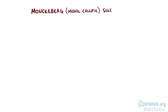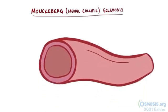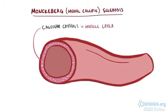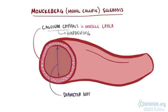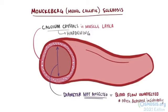Another type of arterial sclerosis is called Monckeberg sclerosis, or medial calcific sclerosis, and this is caused by the formation of calcium crystals in the muscular layer of the blood vessel wall, leading to hardening of the blood vessel, but this doesn't affect the diameter of the lumen. Since blood flow isn't impaired, it doesn't really cause any signs and symptoms, so it's usually detected during a diagnostic procedure for something else, like mammograms, since mammographies are used to look for calcification as a sign of breast cancer.